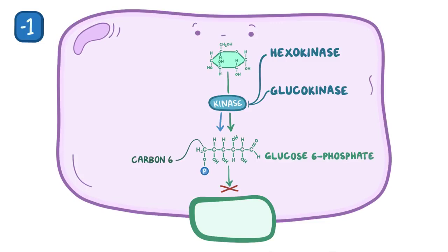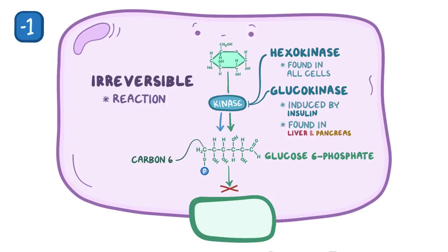Both enzymes pretty much do the same thing, but hexokinase is found in all cells, whereas glucokinase, like glucose transporter 2, is induced by the presence of insulin, and is found in the liver cells and the beta cells of the pancreas. This first step is irreversible, meaning that the reaction can only go in the glucose-to-glucose-6-phosphate direction, and not vice versa.